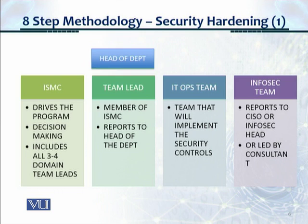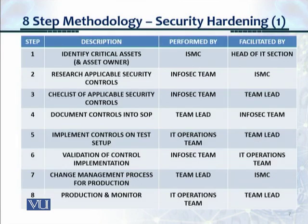You also have the IT operations team, which could be from the database team, the application team, network operations, or system operations. These teams implement the security controls and typically report to the team lead, who in turn reports to the head of the department. Then there's the information security team, which reports to the CISO, the head of information security, or alternately would be led by a consultant if there's not a very strong security team in place.